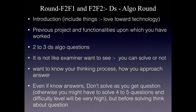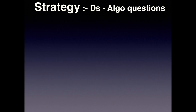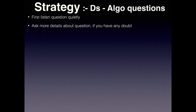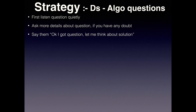So don't be over-smart. Take your time and think about the question, then answer them. Let's dig deeper into the strategy for how to solve a DS algorithm question. First, listen to the question quietly. After that, ask for more details about the question, and if you have some doubt, ask them. Let them know that you understood the question and tell them that you need time to think. You can say: 'Okay, I got the question, let me think about the solution.'